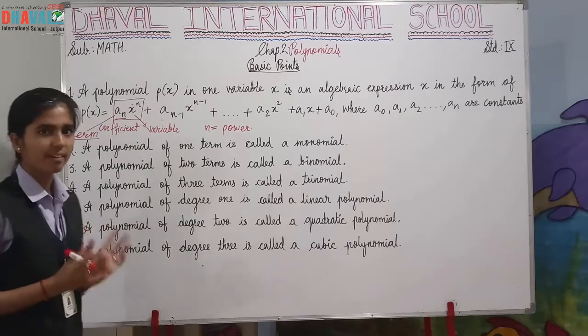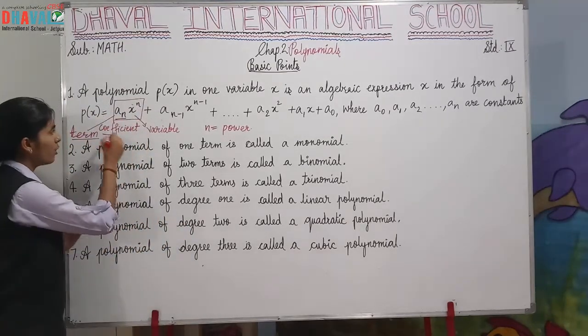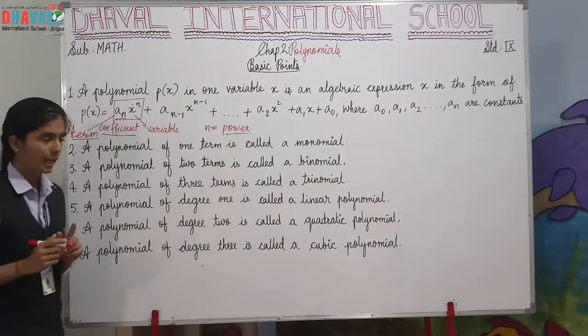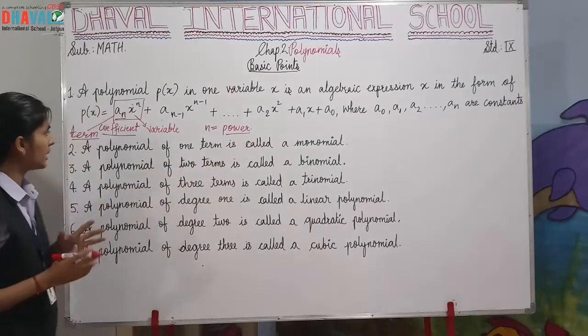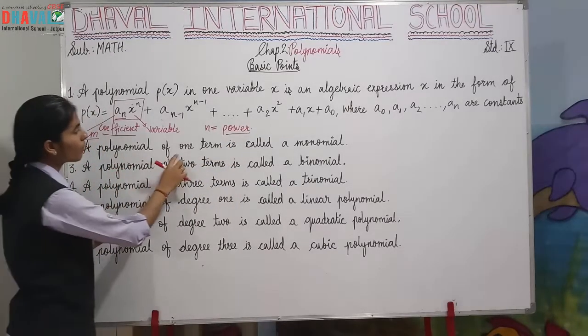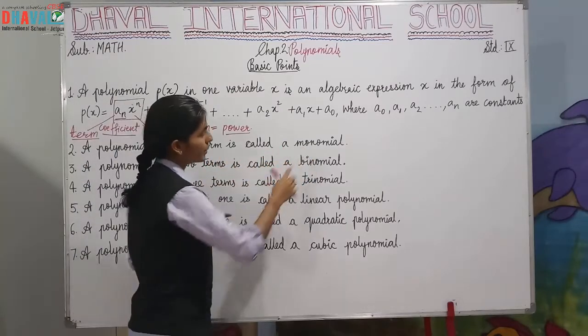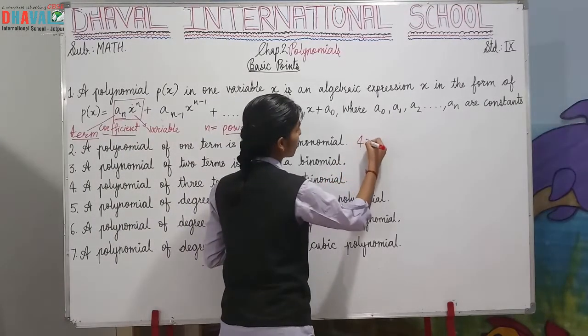Now the polynomials are divided into different types on the basis of coefficient and power. So let's begin with the first: a polynomial of one term is called a monomial. For example, 4x.